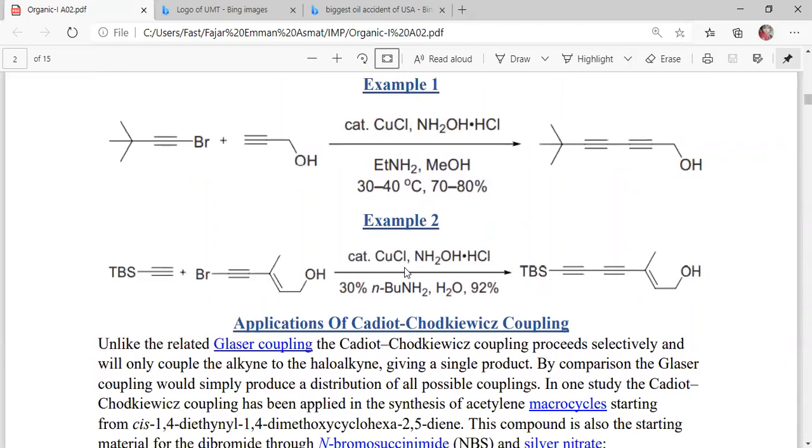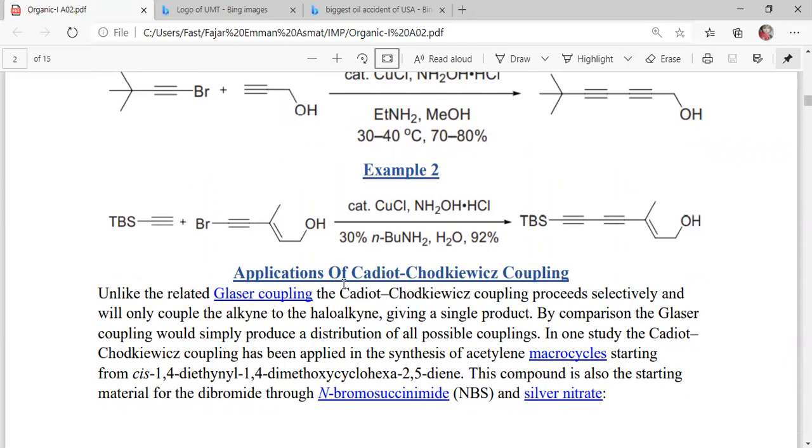Unlike the related Glaser coupling, this coupling proceeds selectively and will only couple the alkyne to the halo-alkyne, giving a single product. By comparison, the Glaser coupling would simply produce a distribution of all possible couplings.